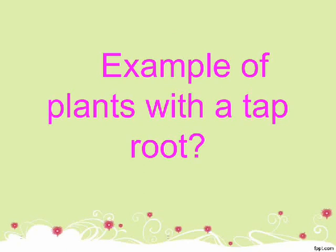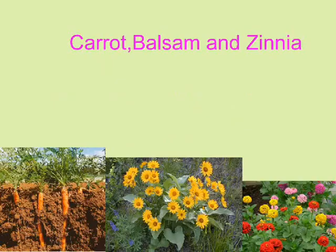Examples of plants with a taproot include carrot, balsam, and zinnia.